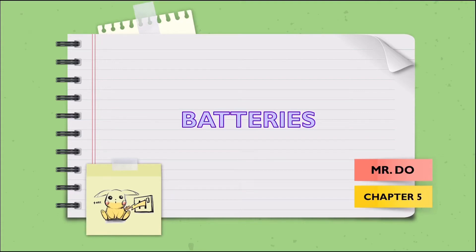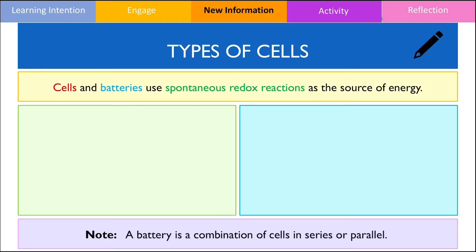Hello class. In this video, I'll be discussing batteries, the different types of batteries and how they work. Batteries are found in every household and supply energy to many portable devices including your phone, watch and remote controls. Batteries are made up of a series of electrochemical cells which harness the spontaneous redox reaction to convert chemical energy into electrical energy.